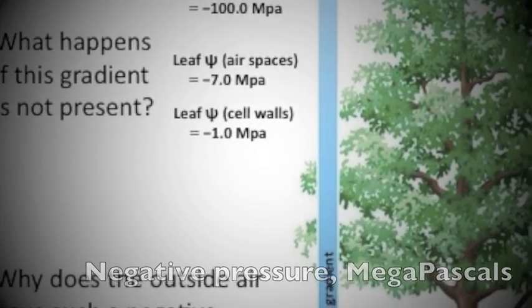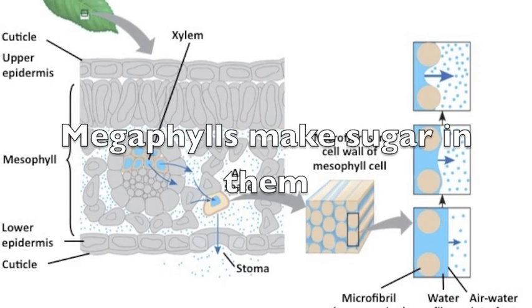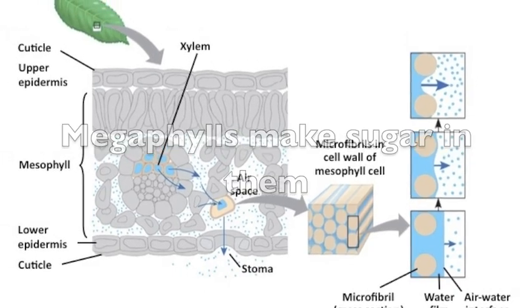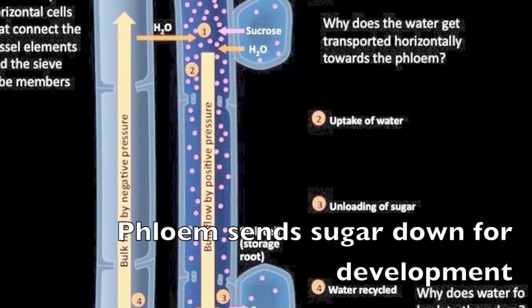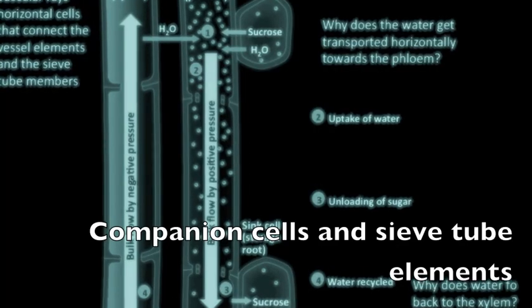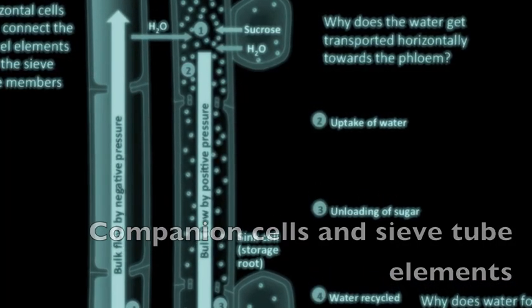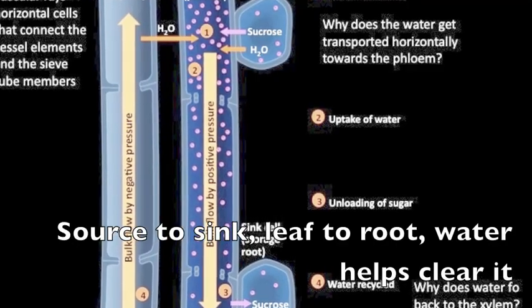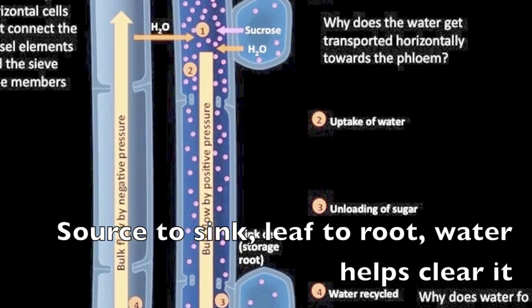Negative pressure, megapascals outside the leaves, water goes up and out. Light starts it up in photosynthesis, mega yields making sugar. Phloem forms and sugar down for development, companion cells and sieve tube elements, source to sink, cell, leaf to root, water helps to clear it.